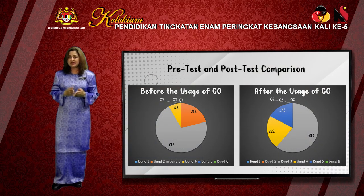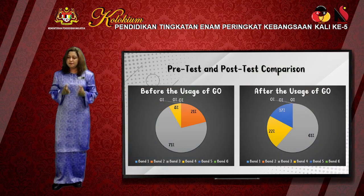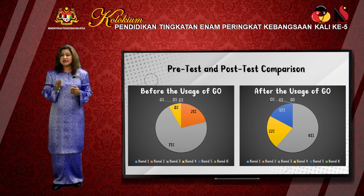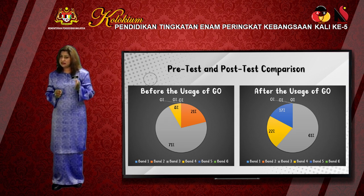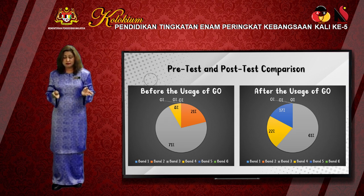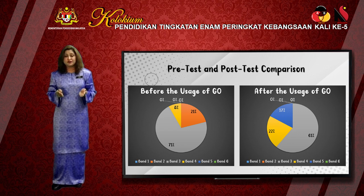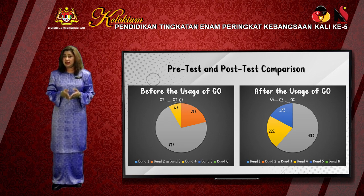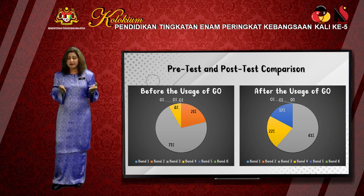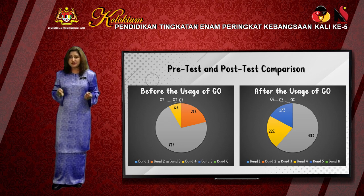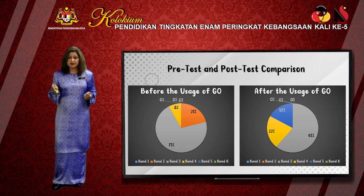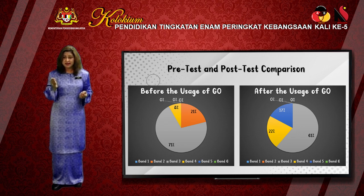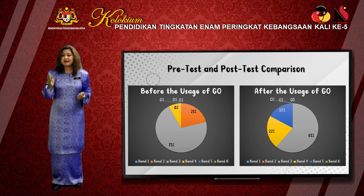Looking at the pre-test and post-test comparison — before using the graphic organizer, about 21% of students achieved band 2, about 71% were band 3 achievers, and there were no students at band 5. After using the graphic organizer, band 5 achievers appeared and there were no band 2 students remaining.